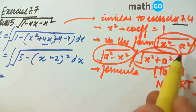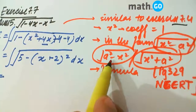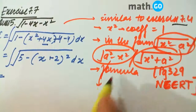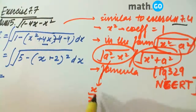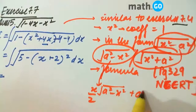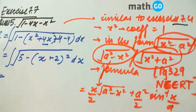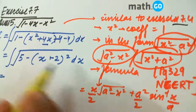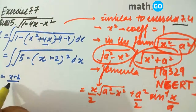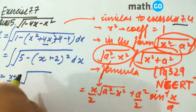Now, simple formula application. It is of the form √(a² − x²). This formula says: x by 2 times root of (a squared minus x squared) plus a squared by 2 times sine inverse of x by a. Applying this formula, x here is (x + 2), so we get (x + 2) upon 2 times root of the complete expression, which is 1 minus 4x minus x squared.